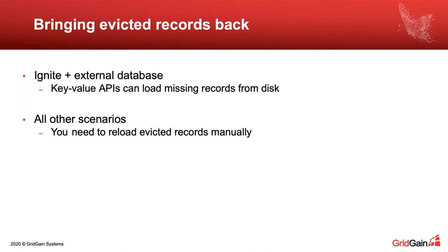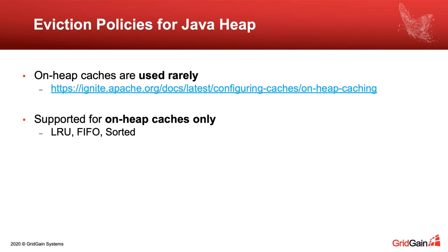There are also eviction policies for the Java heap. When talking about those in relation to Java heap, Ignite has an on-heap cache, but that feature is used rarely and may not be supported in Ignite 3.0. Nevertheless, if you enable Ignite on-heap cache for keeping records, you can use the following eviction policies: LRU, FIFO (First In First Out), and Sorted policies.